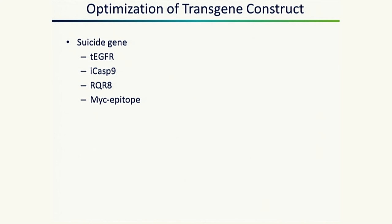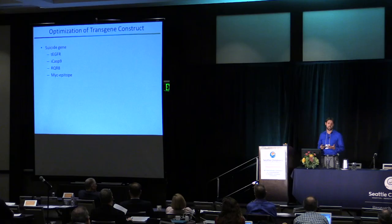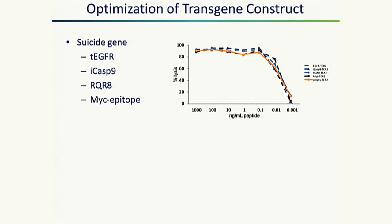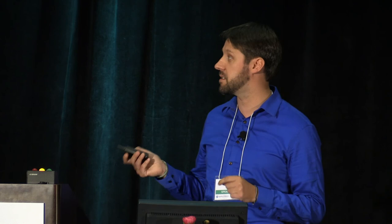We are also looking to include a suicide gene in our construct in case of unexpected or non-specific toxicity from the TCR. We are working with truncated EGFR, iCasp9, RQR8, and MYC-epitope suicide gene candidates. In killing assays, all constructs showed similar killing compared to the TCR without a suicide gene. To assess susceptibility to the suicide drug, we incubated cells with or without the drug for 24 hours and then assessed viability by flow cytometry, and we observed susceptibility in cells containing the suicide gene.